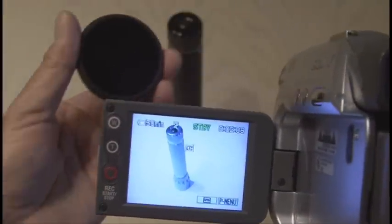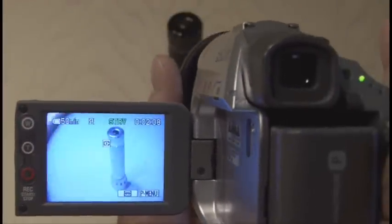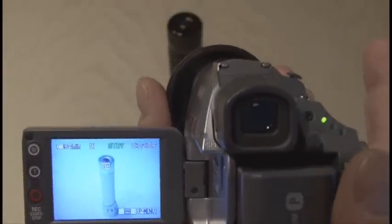As you can see in this footage, with Night Shot Plus on, holding the IR Pass filter up to the camera allows you to see through it.